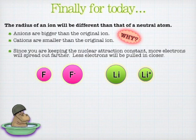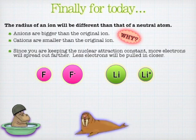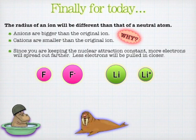It's just the opposite for cations. If you have fewer electrons, then each of them can get pulled in a little bit more. Plus, there's less electron-electron repulsion. And so therefore it's going to snug in a little bit. So anions tend to get a little bigger, and cations tend to get a little smaller.